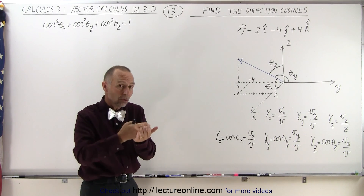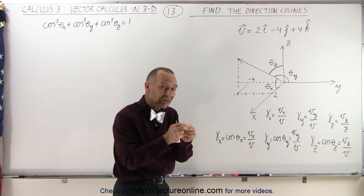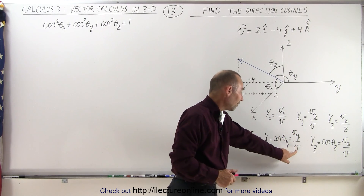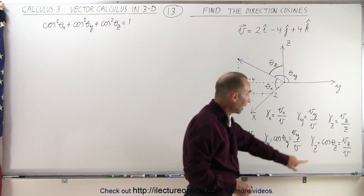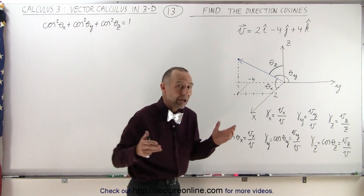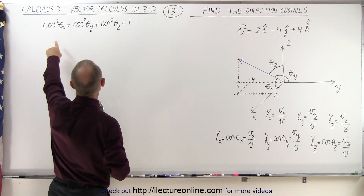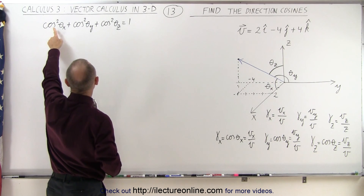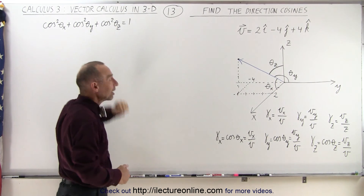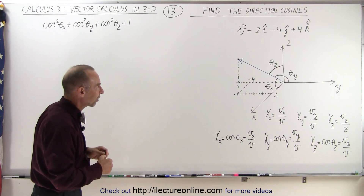The direction cosine is also defined by the magnitude of the vector in the x-direction divided by the magnitude of the vector, the magnitude in the y-direction divided by the magnitude, and the magnitude in the z-direction divided by the magnitude. One more important property is that the direction cosines squared in each direction, added together, must equal 1. We're going to check that after we find the direction cosines of this vector.